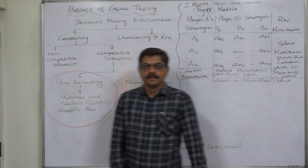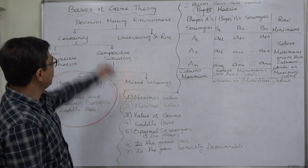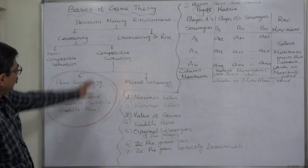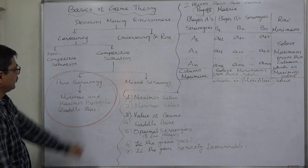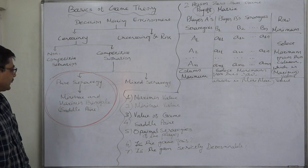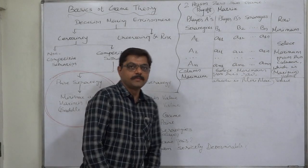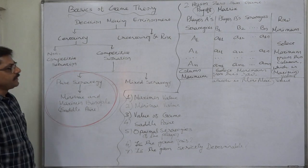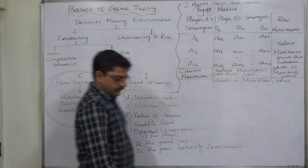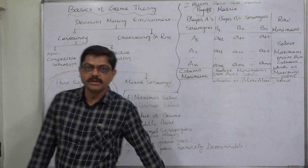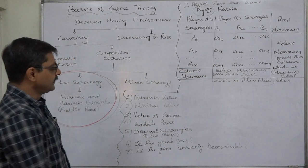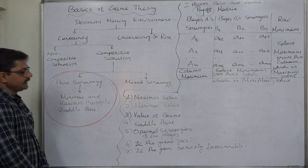Hello friends, welcome. Let us start a new topic: basics of game theory. When the decision-making environment is a competitive situation and the situation is of pure strategy, we can use the minimax and maximin principle — the saddle point principle — for decision making. In this lecture, we are going to discuss some basic points about game theory, when there are two or more competitors who don't know anything about the competitor's strategy. Game theory is a very useful tool for decision making in this category.